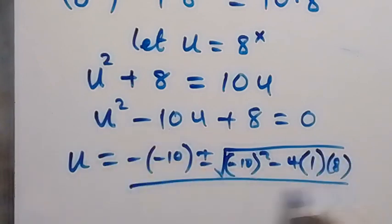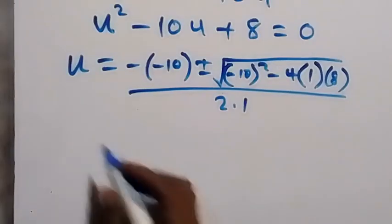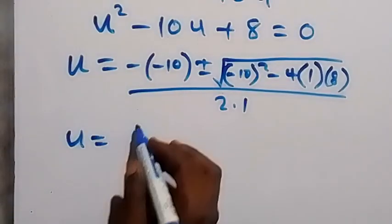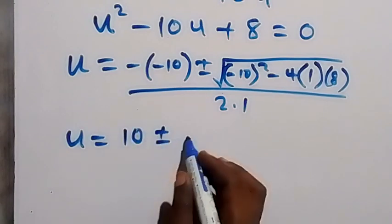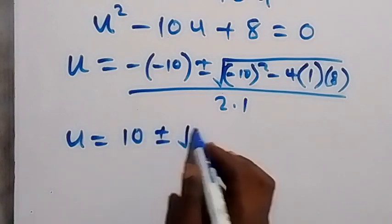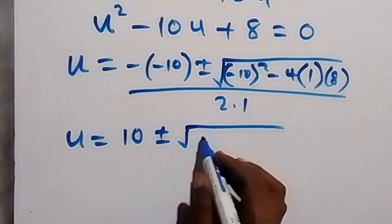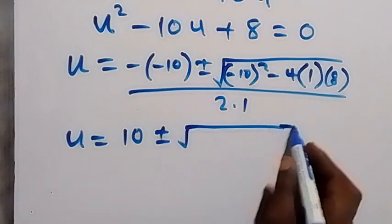Then over 2a, 2 times 1. Then when we simplify this we have u to be equals to 10 plus or minus square root of minus 10 square, that's 100.